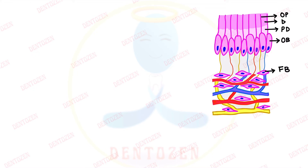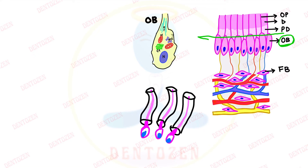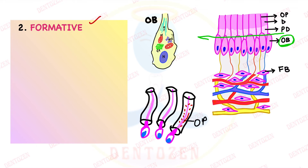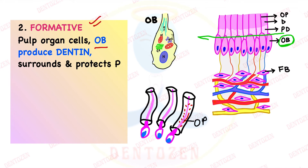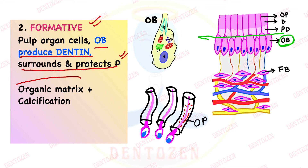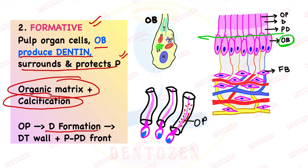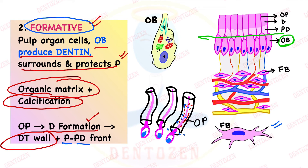The second function is related to odontoblast cells present in the pulp. Odontoblast cells lay down dentine, and during dentine formation their processes — odontoblastic processes — extend inside the dentinal tubules, helping in dentine formation along the tubule walls and at the pulp-predentin interface. The odontoblast cell produces the organic matrix of dentine and also participates in the calcification of dentine. Fibroblasts also contribute by forming the collagen fibers of the pulp. This is the formative function.